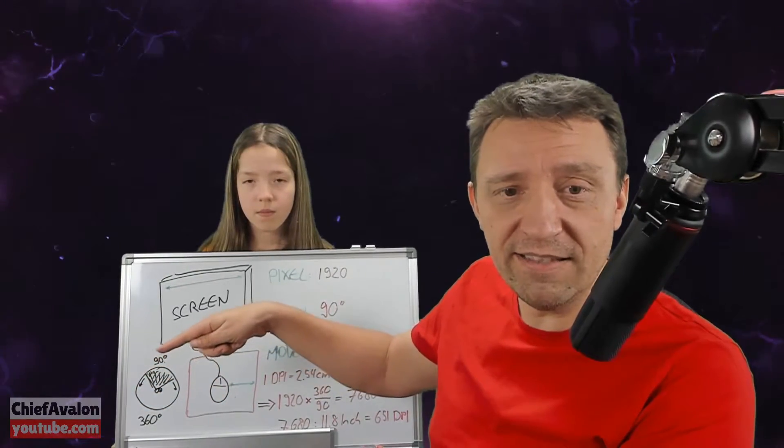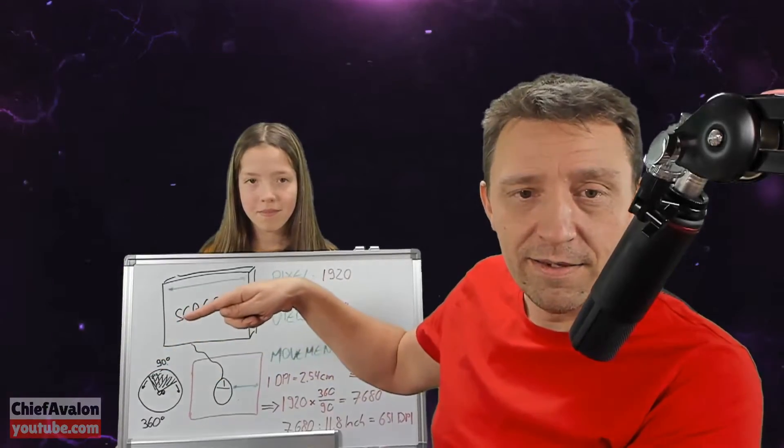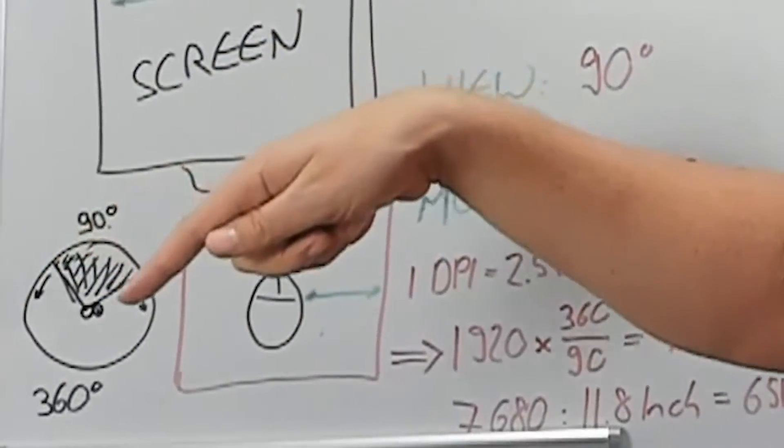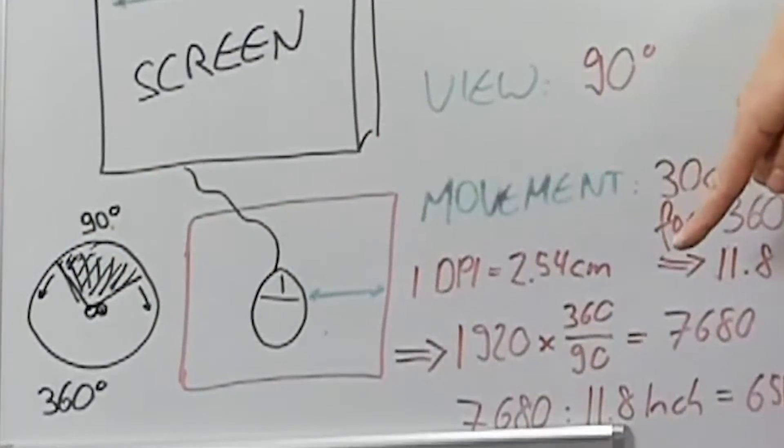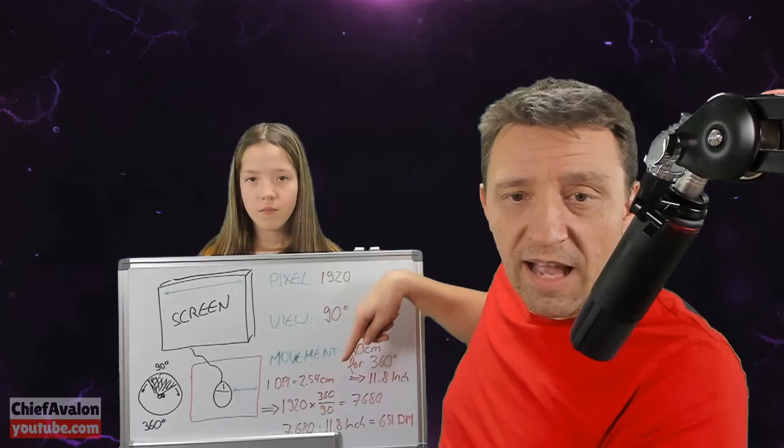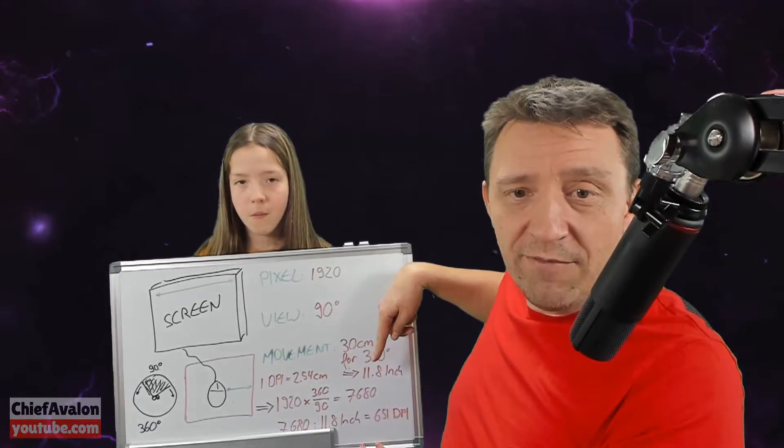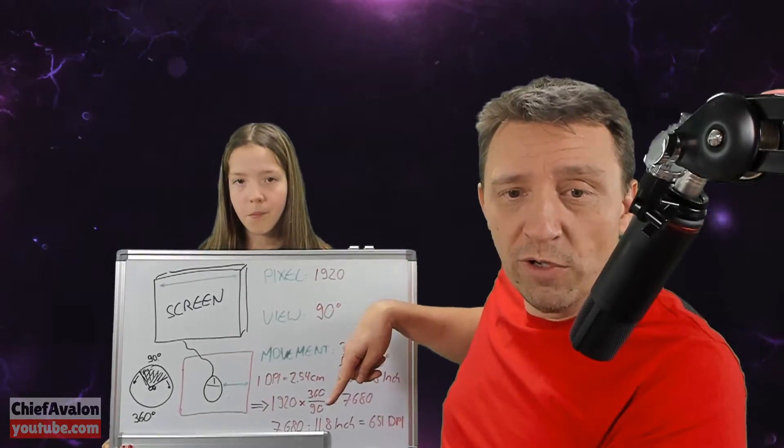That basically means a full turn around the environment will use 7680 pixels of your screen. Just imagine you have a 360 degree screen going around you. That screen would have 7680 pixels. I said you want to move your mouse 11.8 inches for a full turn.